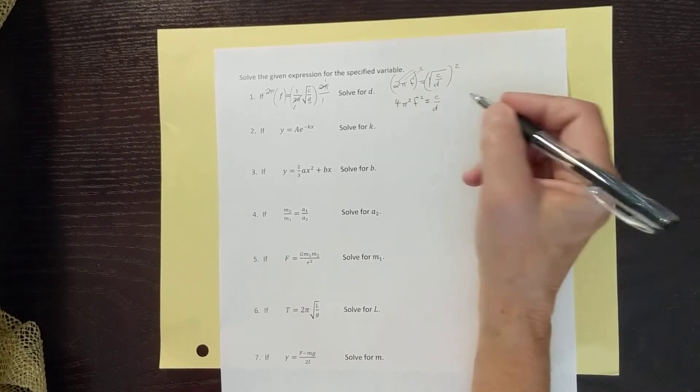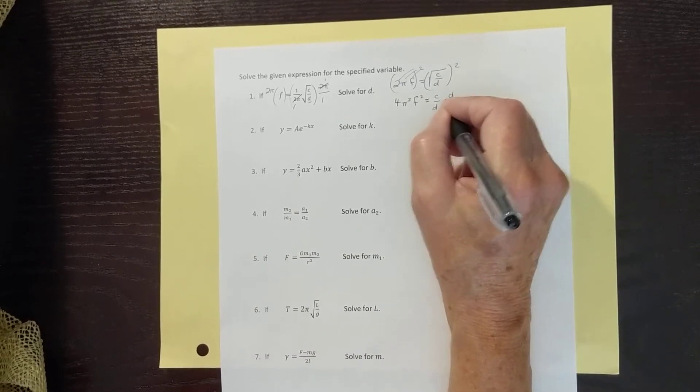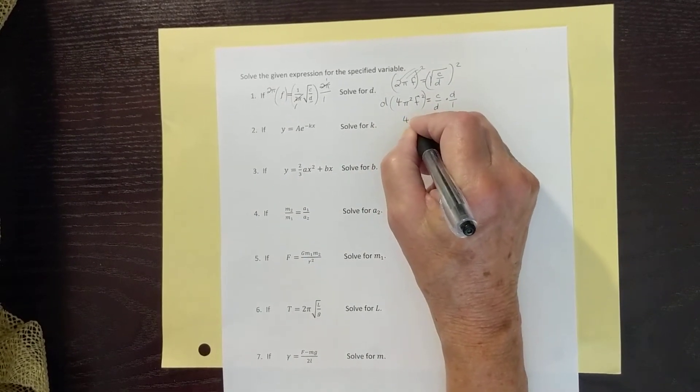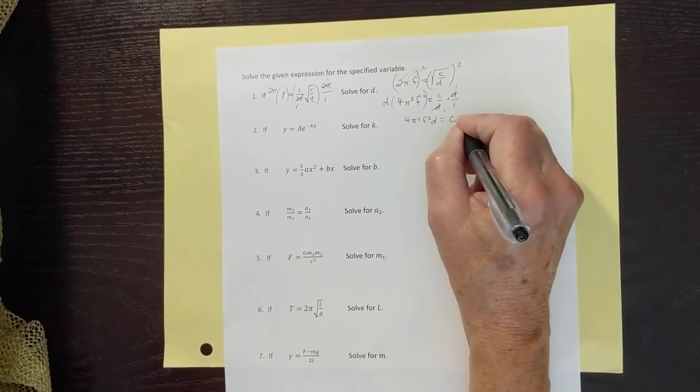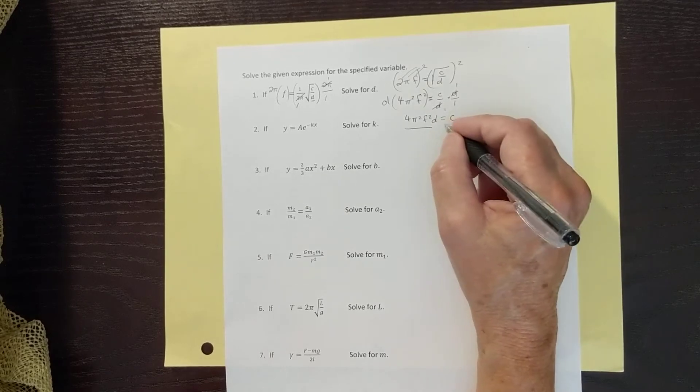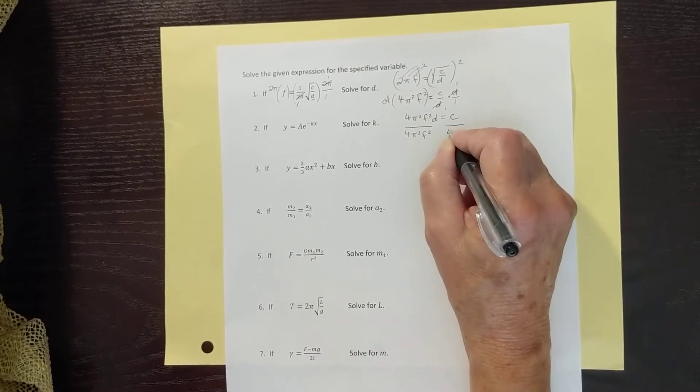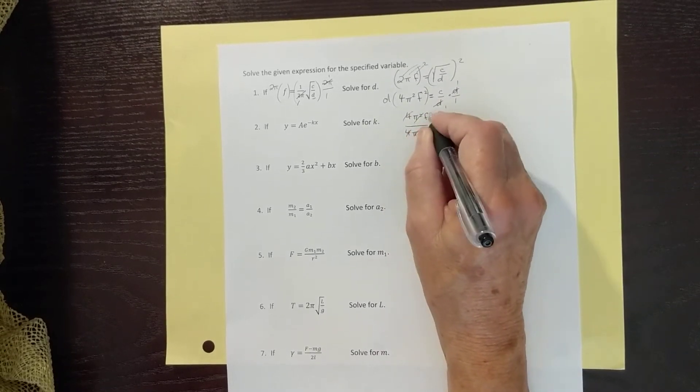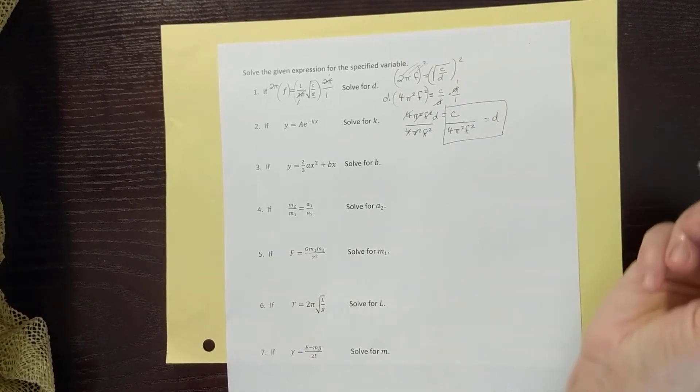And so now I'm going to kill my fraction. I like to multiply both sides by the denominator. So if I multiply this side by d and this side by d, what I get is 4π squared f squared d is equal to c. Then if I want to solve for d to get it by itself, you just simply divide both sides by whatever's in your way. So what's in my way right here is 4π squared f squared. So these cancel, and so this is what d is equal to. All right, that's the first example.